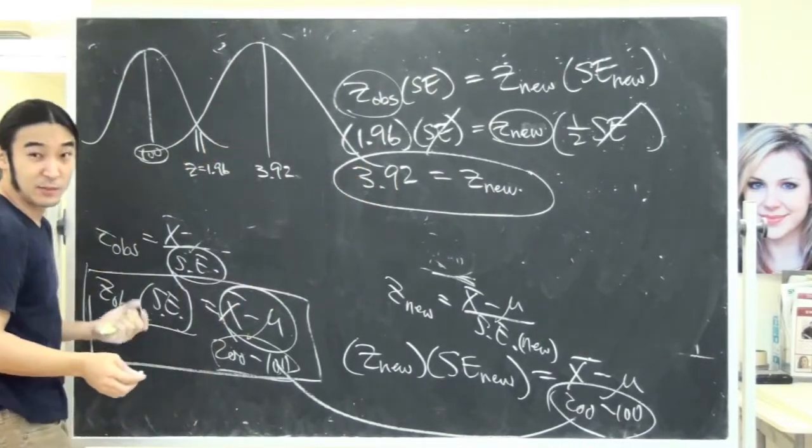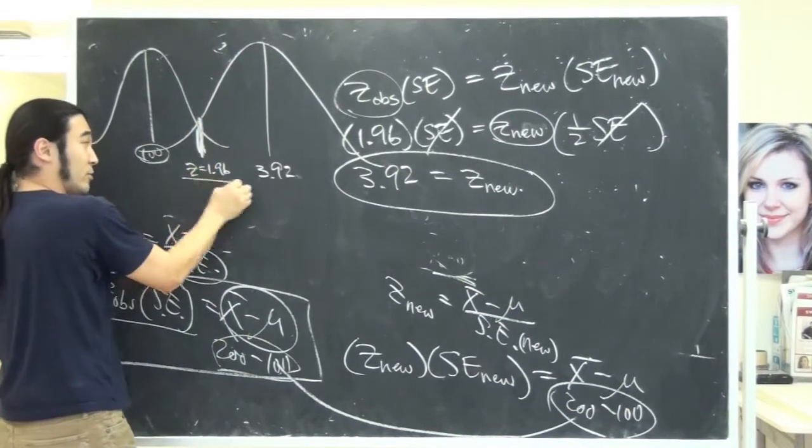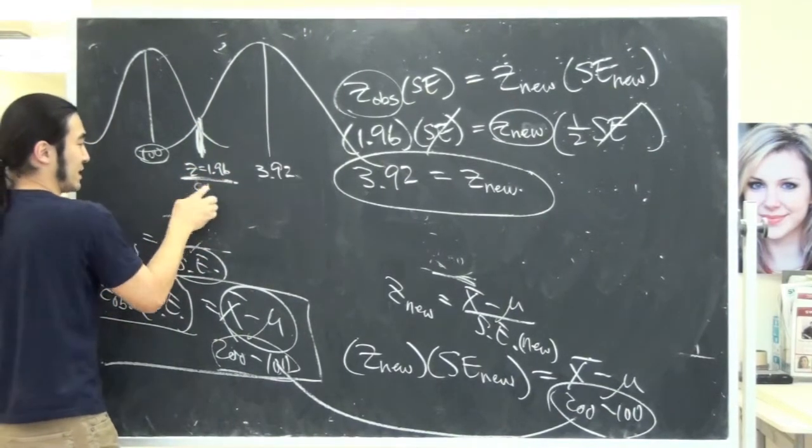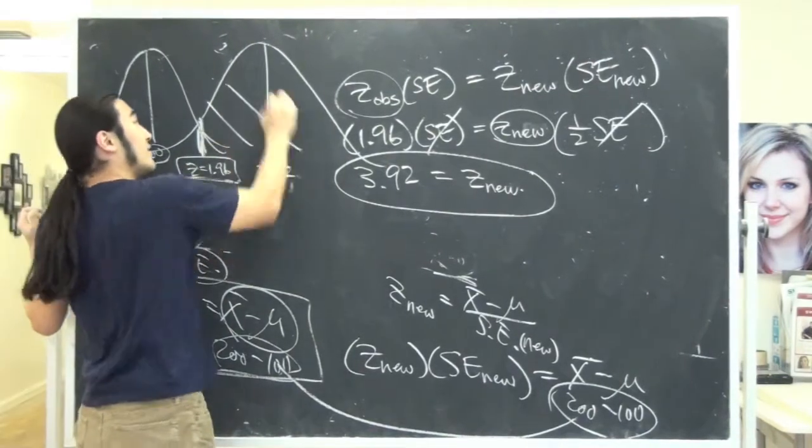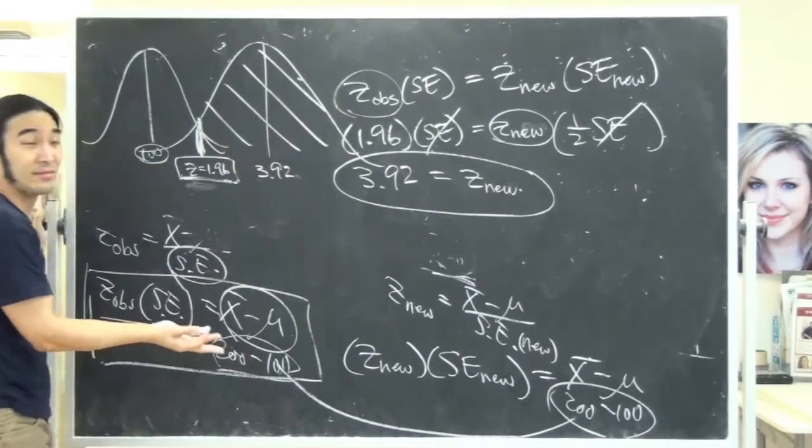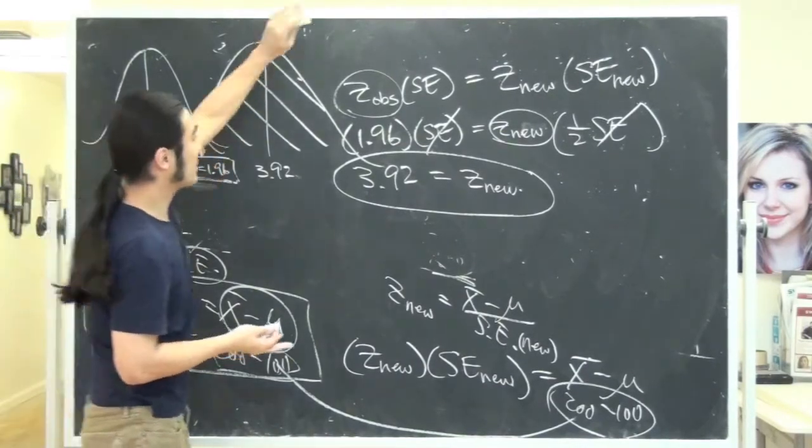So now you know that your z observed is 3.92. So that's somewhere over here. Go ahead and draw your curve. Oh, sorry. Lopsided curve. But you can clearly see now. Here's your critical mark. Remember, the z crit does not change. So I'm going to emphasize that again. This is your z crit. It does not change. Everything to the right of that gives you your power. That's huge. It's way bigger. Which should be right. It should be bigger than 50%.